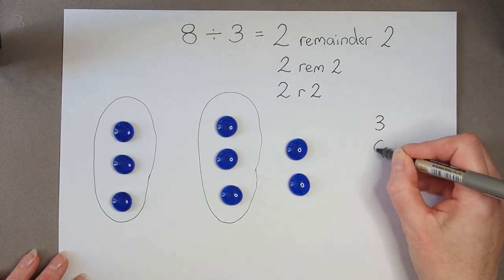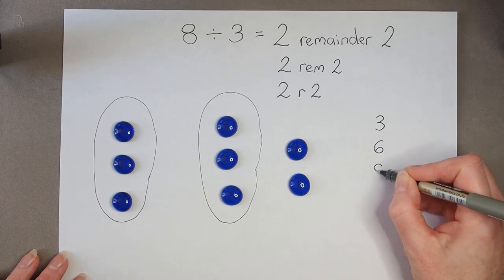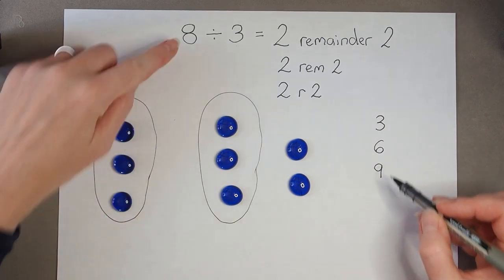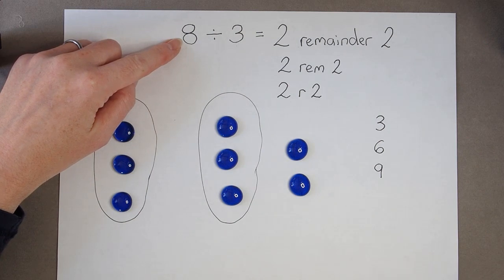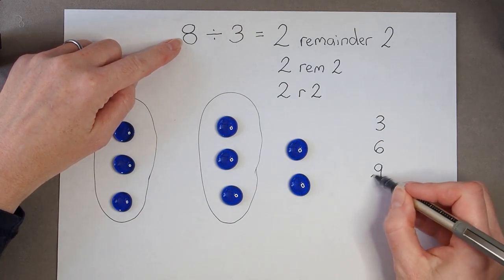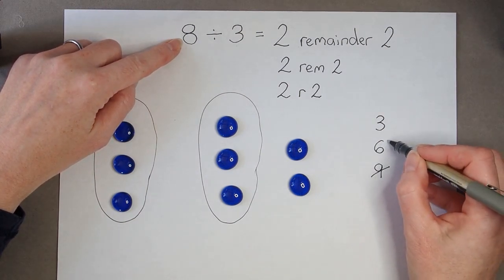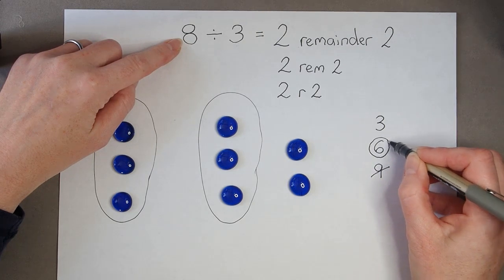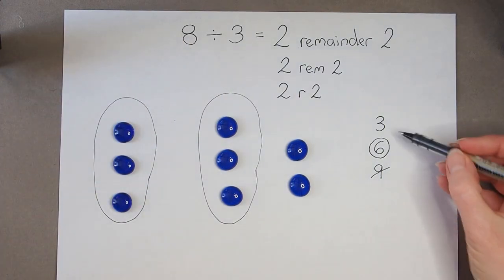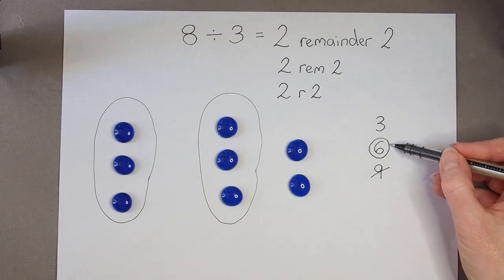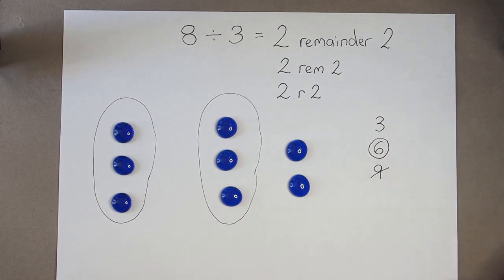3, 6, 9. I've only got 8 to start with, so I can't go as far as 9. I have to stop on 6. And I can see that that's the second multiple.